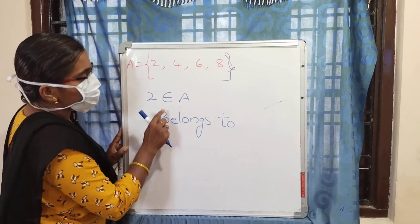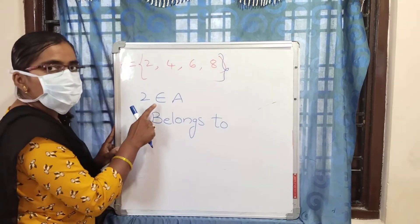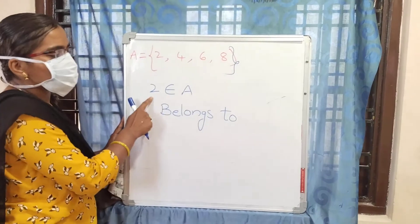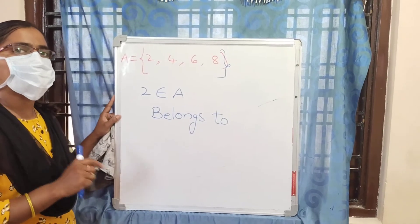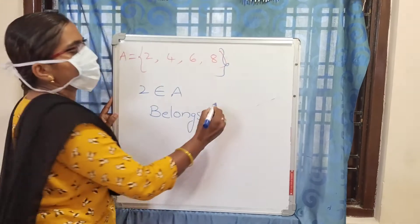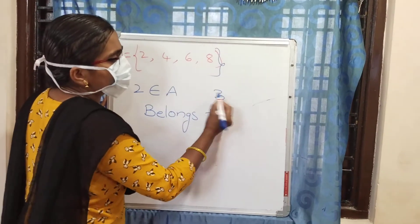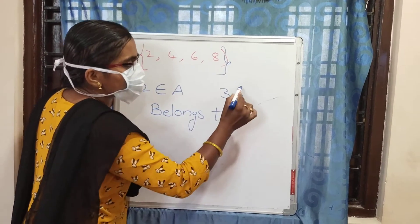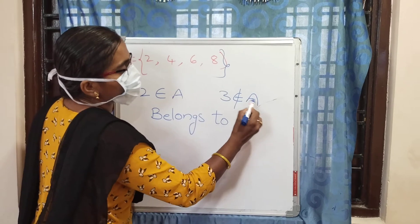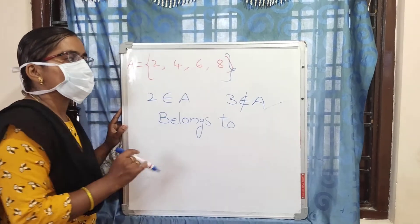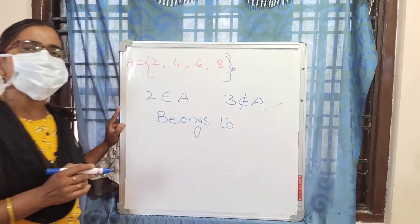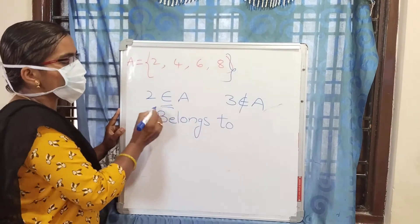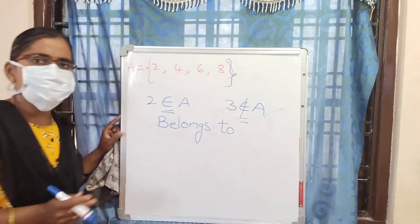Now we look at the 'belongs to' symbol. If 2 belongs to set A, we write it with the membership symbol. If any number, for example 3, is not in set A, we write: 3 does not belong to A. The symbol for 'not belongs to' is the membership symbol with a negation.